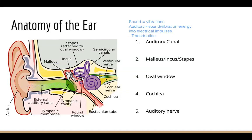Vibrations from the oval window will cause the hairs in the cochlea to move forward and backwards. This causes hair cells inside the cochlea to open up small electrical channels, allowing ions in the surrounding cochlear fluid to enter the hair cell and send electrical signals through the cochlear nerve, which is your auditory nerve.